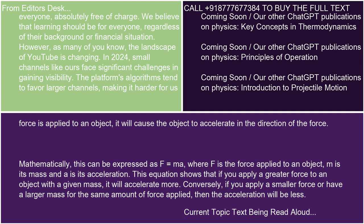Mathematically, this can be expressed as F equals MA, where F is the force applied to an object, M is its mass, and A is its acceleration. This equation shows that if you apply a greater force to an object with a given mass, it will accelerate more. Conversely, if you apply a smaller force or have a larger mass for the same amount of force applied, then the acceleration will be less.